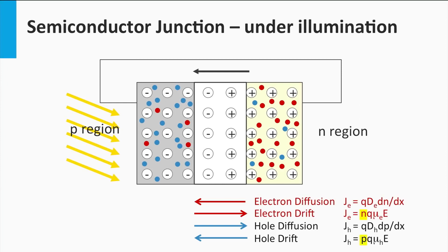Subsequently we increase the drift. Looking at the equation for the current densities, we see that we are significantly increasing the drift over the depletion zone, indicated by the larger arrows. Many electrons drift from the p-region to the n-region and many holes drift from the n-region to the p-region. The current density related to drift can be increased by many orders of magnitude under illumination compared to the p-n junction in the dark.